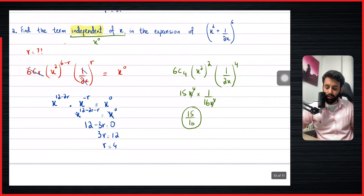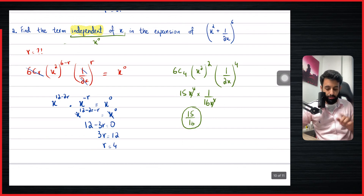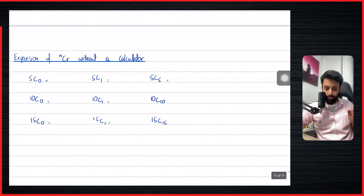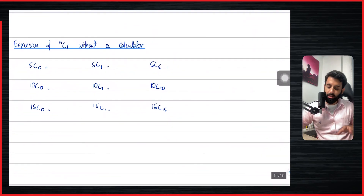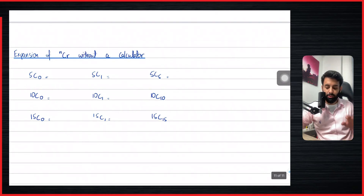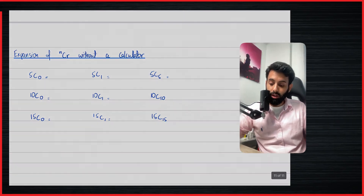That's it — this was the second last concept related to the binomial theorem. I hope you've understood this. In the next video we will learn the very last concept before doing practice questions: how to expand nCr without a calculator, for cases where you are not given the value of n and must work it out manually. I'll see you guys in the next one — take care, bye-bye.